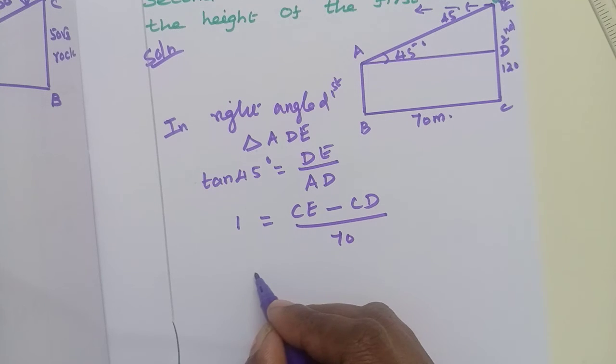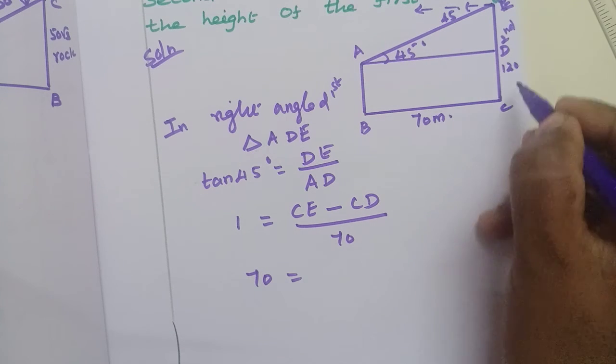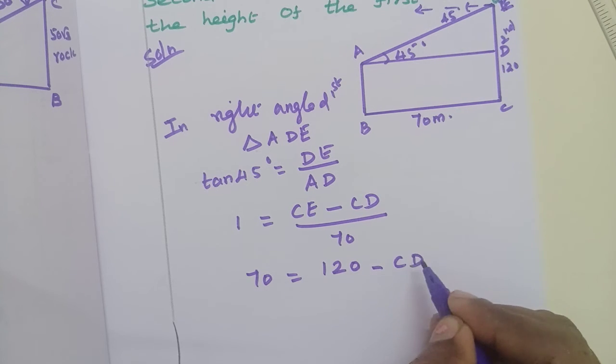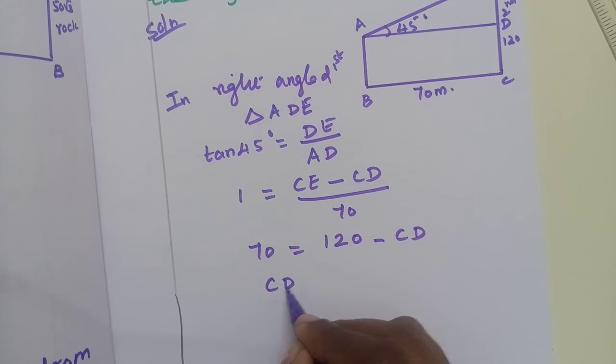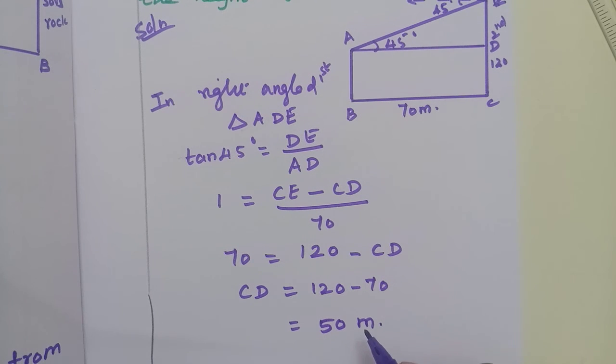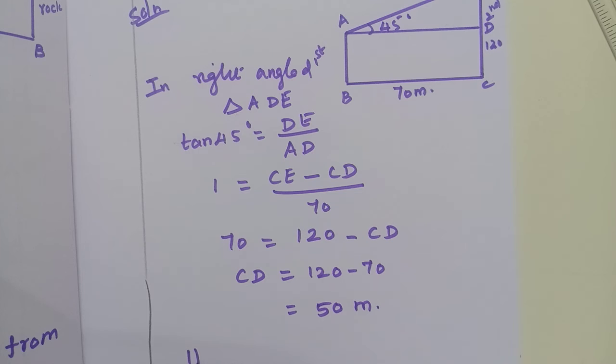1 equals DE, which is CE minus CD, divided by AD. AD equals BC, which is 70. Cross multiply: 70 equals CE, which is 120, minus CD. So CD equals 120 minus 70, which equals 50 meters.